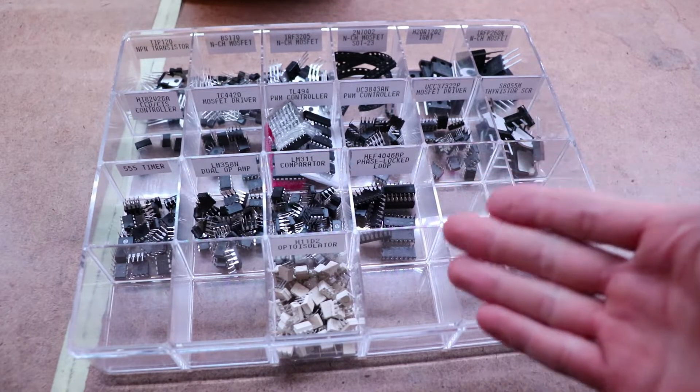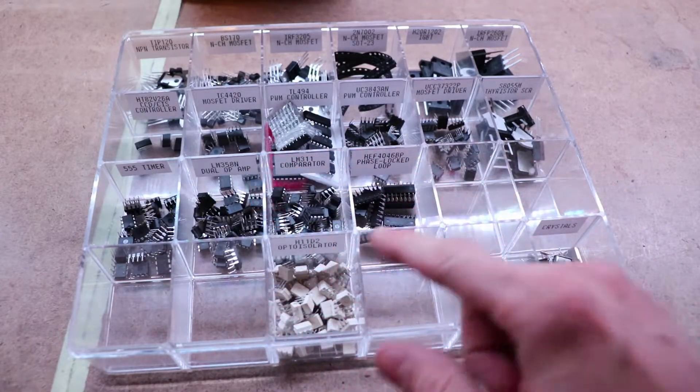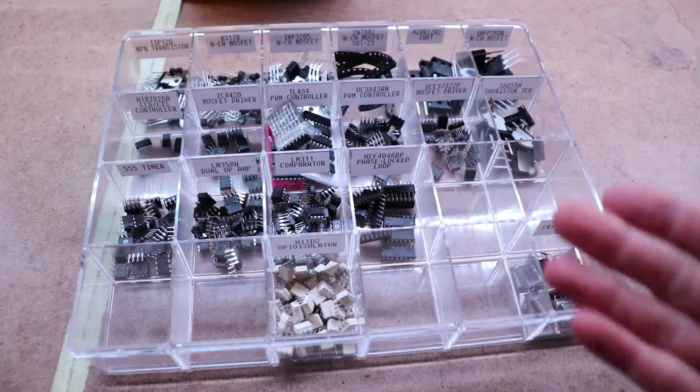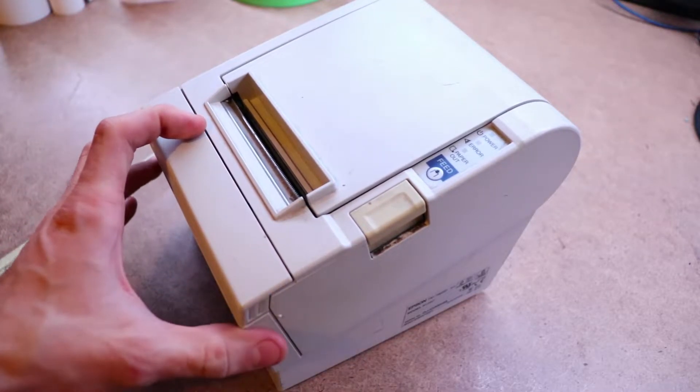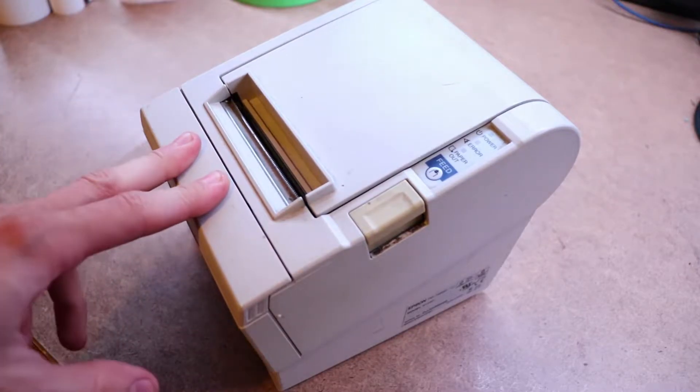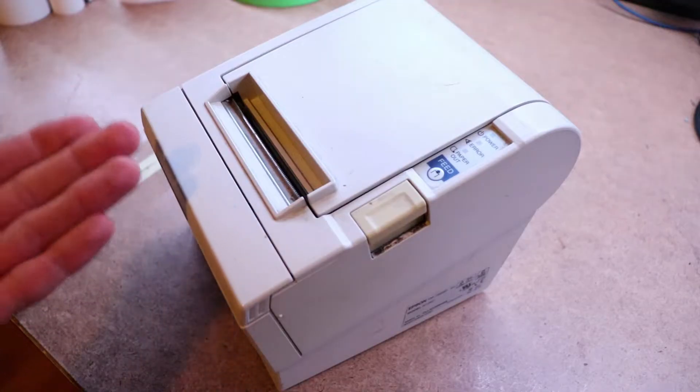I guess if you've stuck around this far then you're interested in how I made these labels with the thermal printer. And that's what I'm going to be explaining next. This is the thermal printer I have and use. This is an old thermal printer by Epson and it was given to me by someone that wanted to throw it out.